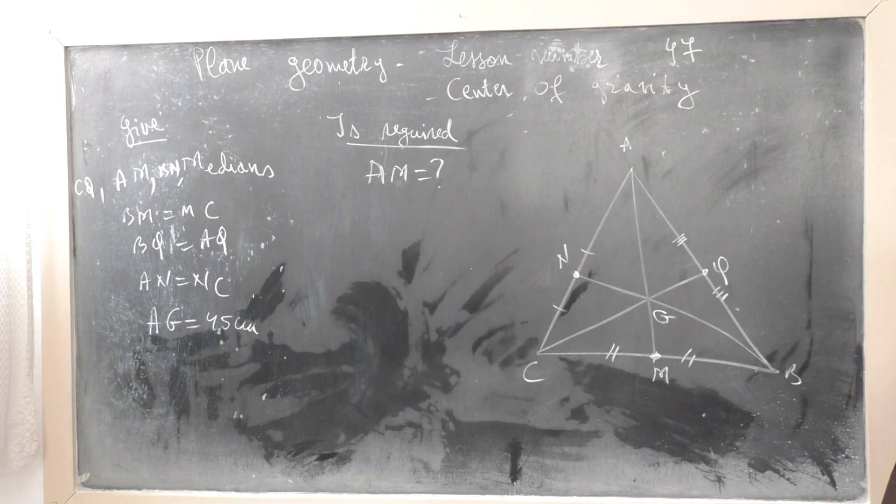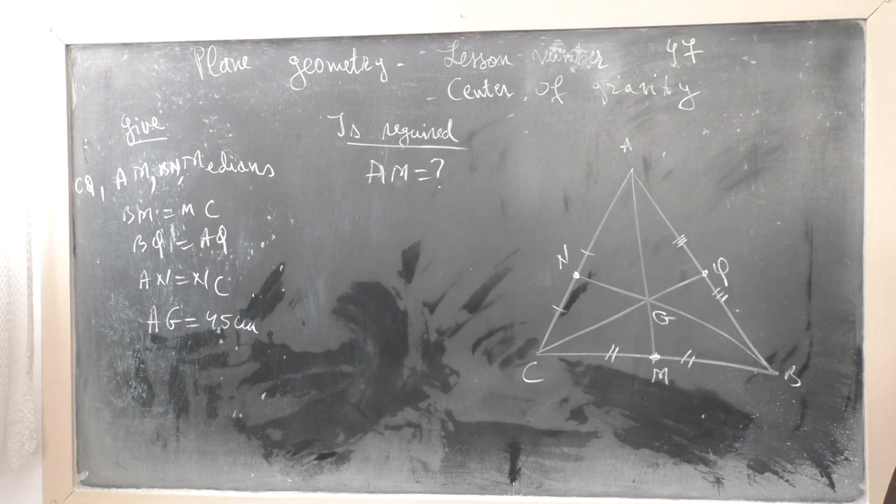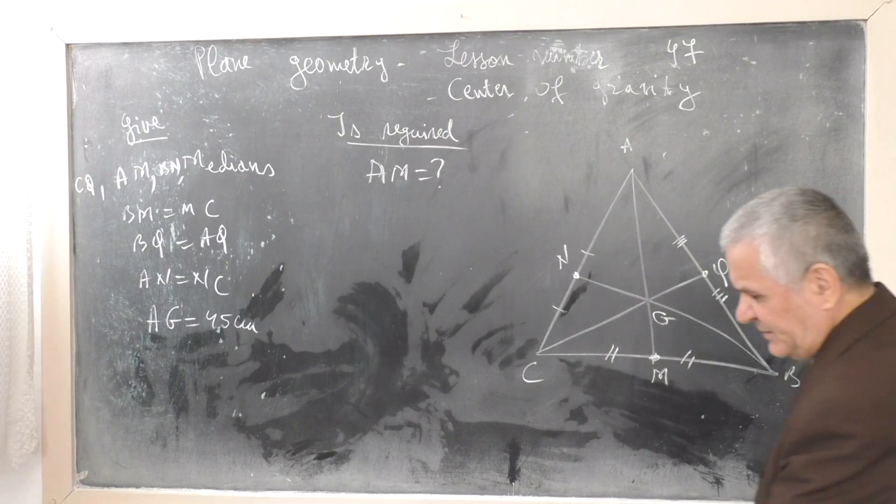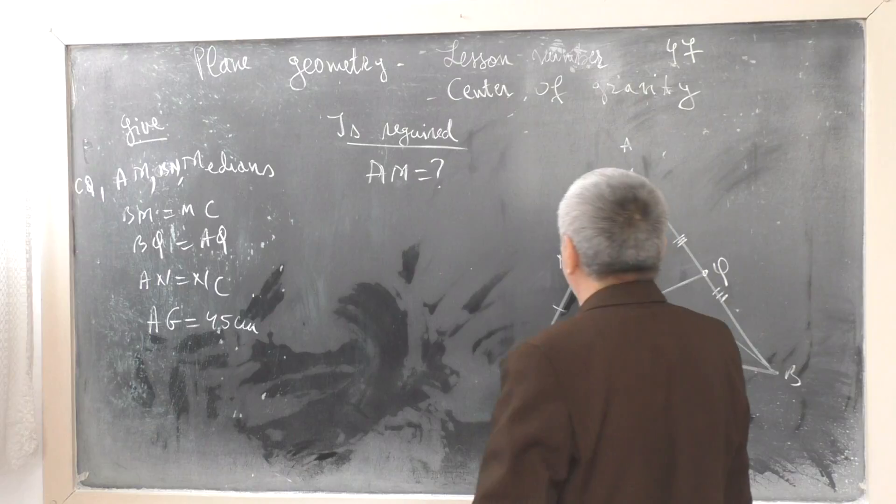AG equals 45 cm. To find: AM, the length of the median.